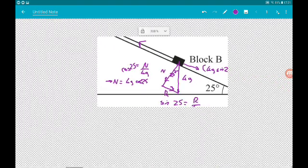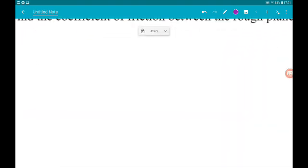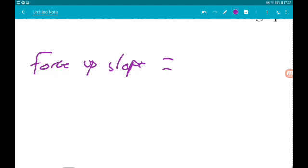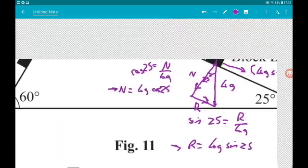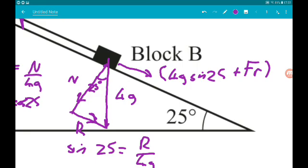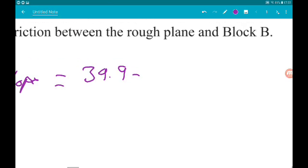Okay, so if we think about now in terms of going up the slope, force up, we know that block B is at rest, so the resulting force is 0. So in terms of the forces, this is tension minus the resistance force, so minus 4g sin 25, minus friction.